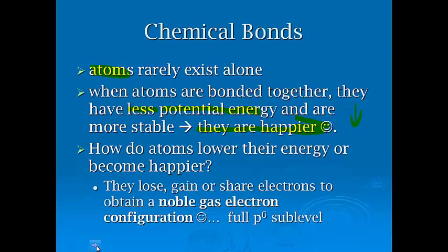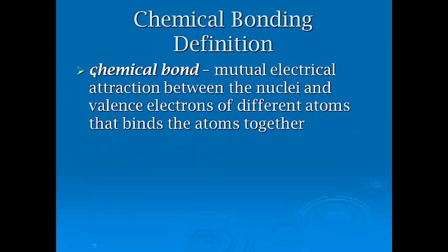How do atoms lower their energy? They lose, gain, or share electrons to obtain a noble gas electron configuration. And for the most part, that means a full p6 sublevel. There are some exceptions to that, but for the most part, it's a full p6 sublevel. That's why we talked about valence electrons and how many there are, particularly with the s and the p's.